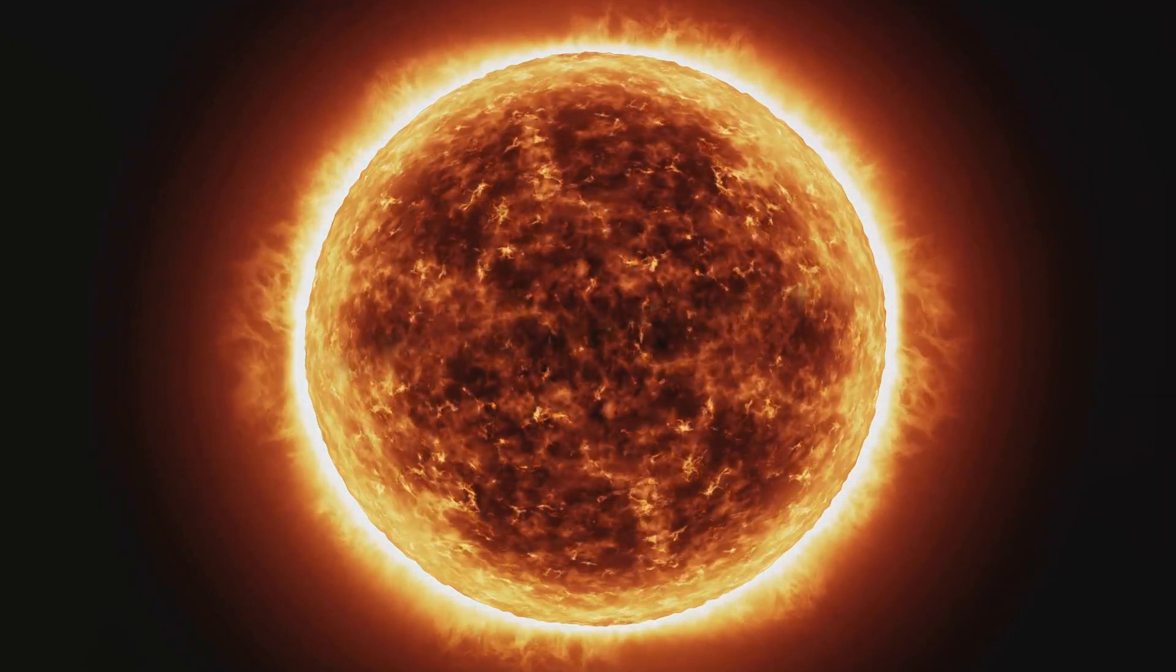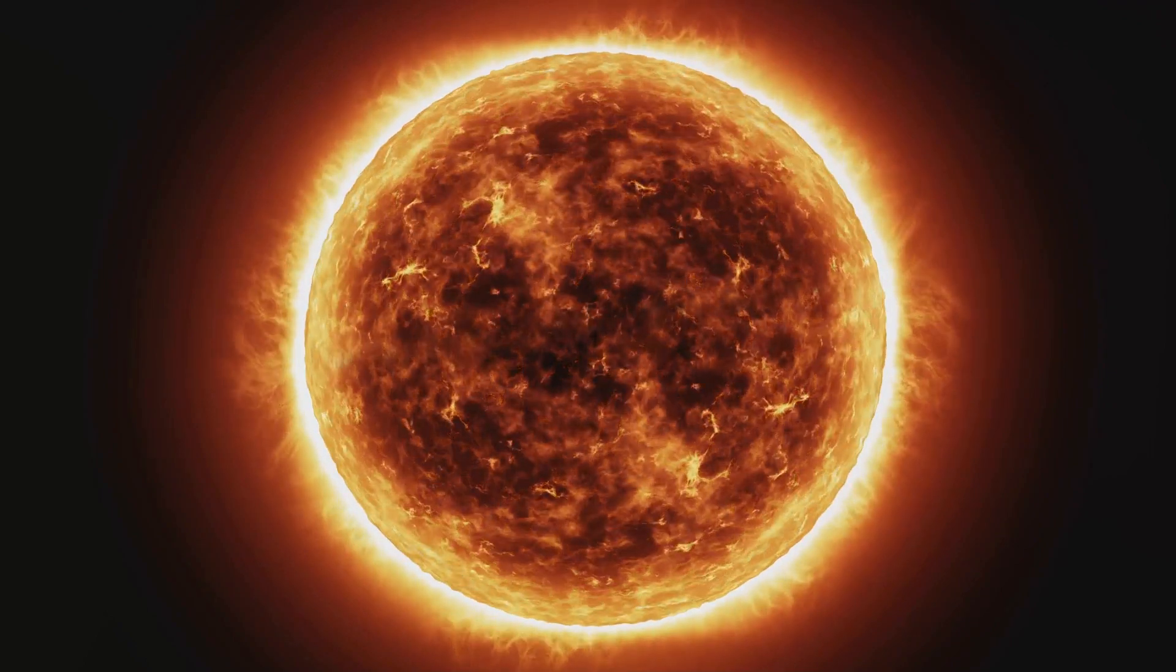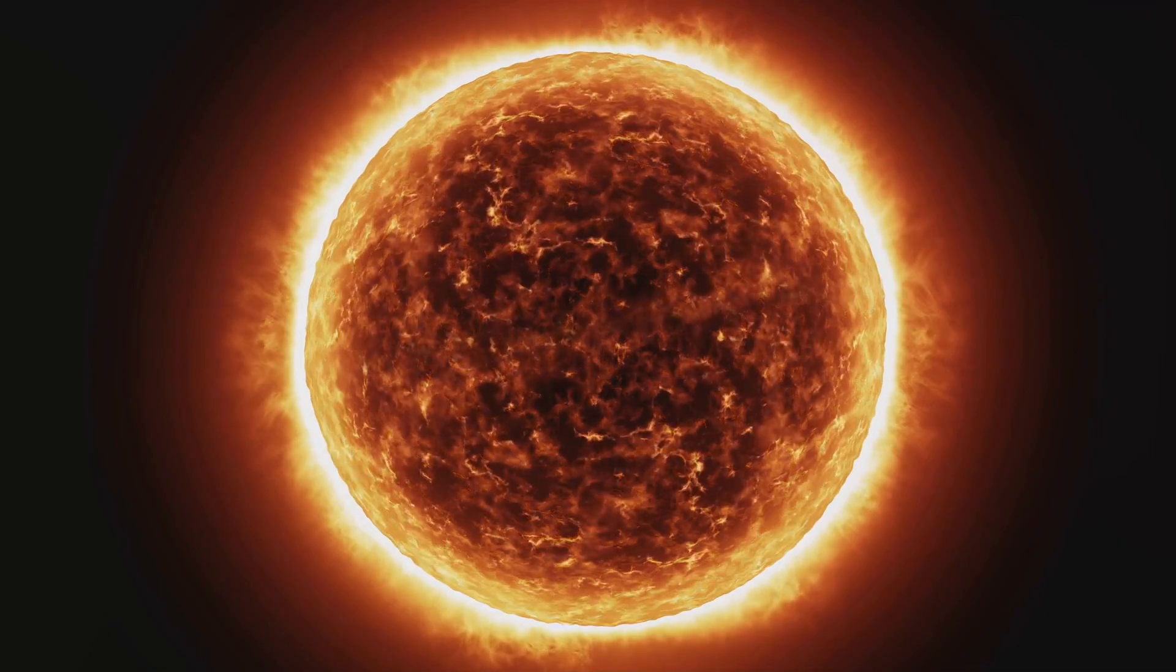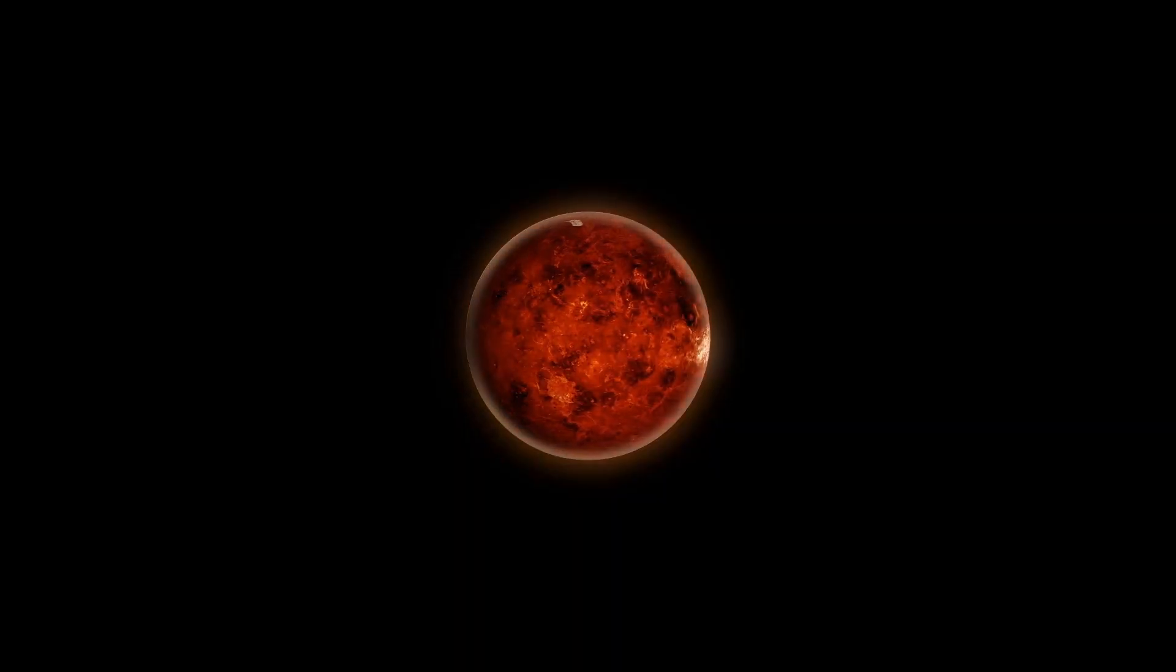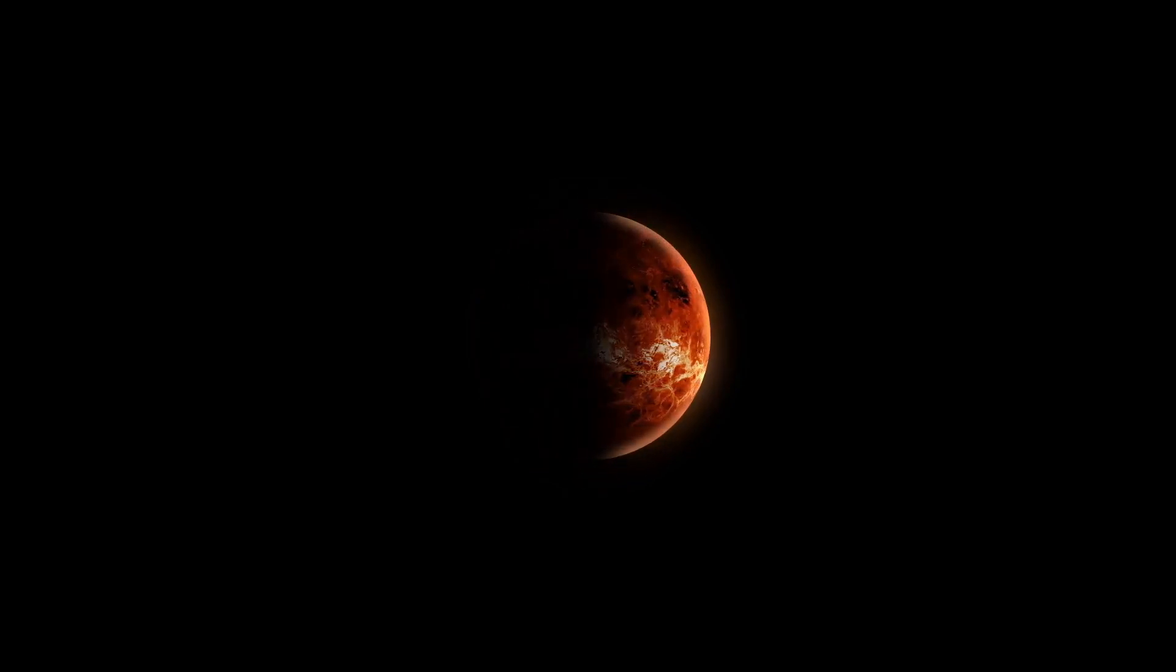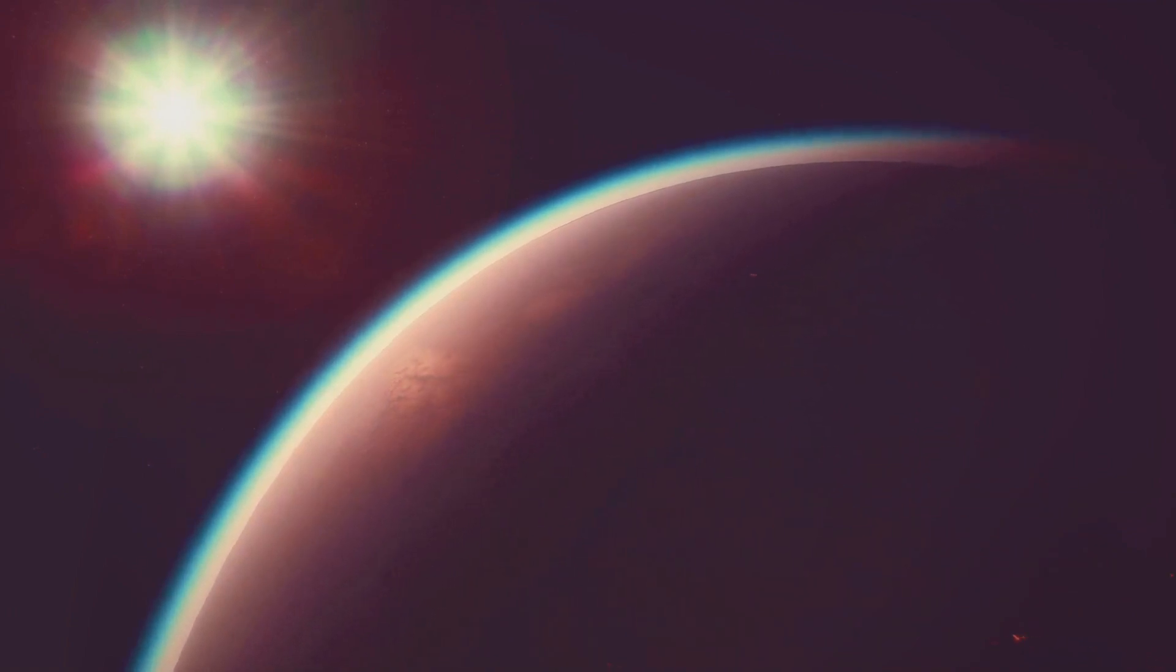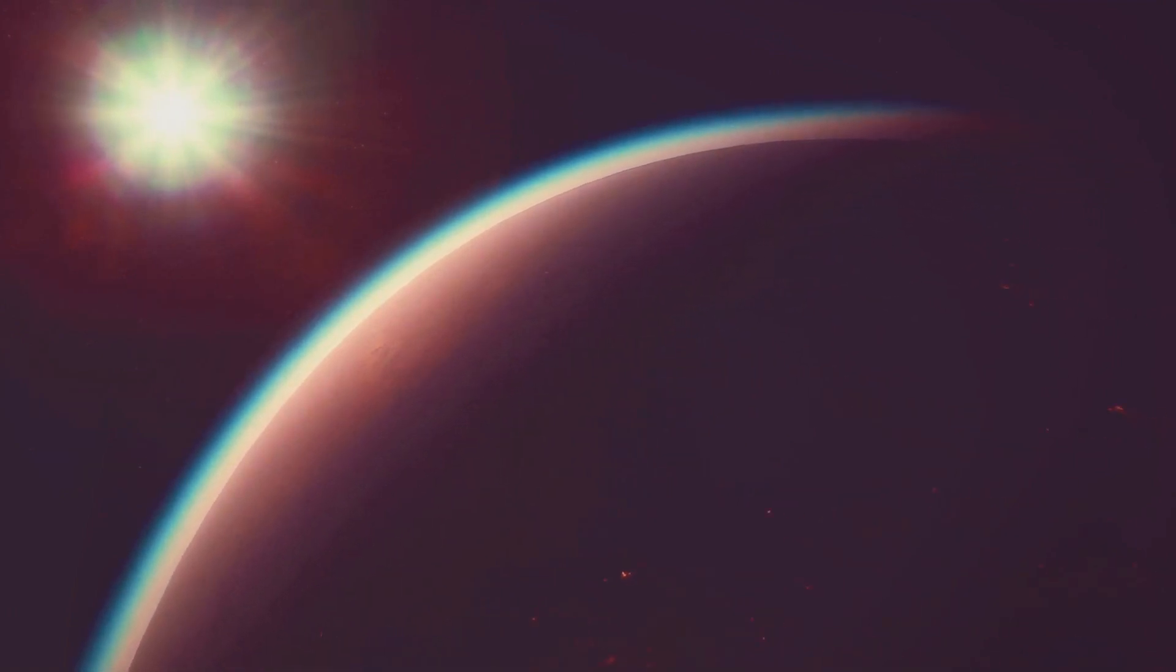You see, Venus has a thick atmosphere composed mostly of carbon dioxide, with clouds of sulfuric acid. This dense atmosphere traps the sun's heat, causing a runaway greenhouse effect. As a result, the average temperature on Venus soars to a scorching 867 degrees Fahrenheit. That's hot enough to melt lead. Even at night, Venus remains incredibly hot, since its thick atmosphere distributes the heat evenly around the planet. So while Mercury might be closer to the Sun, Venus takes the crown as the solar system's ultimate hotspot.